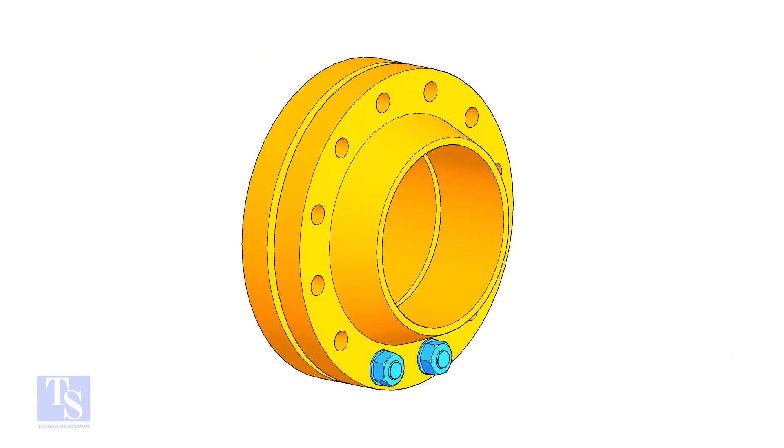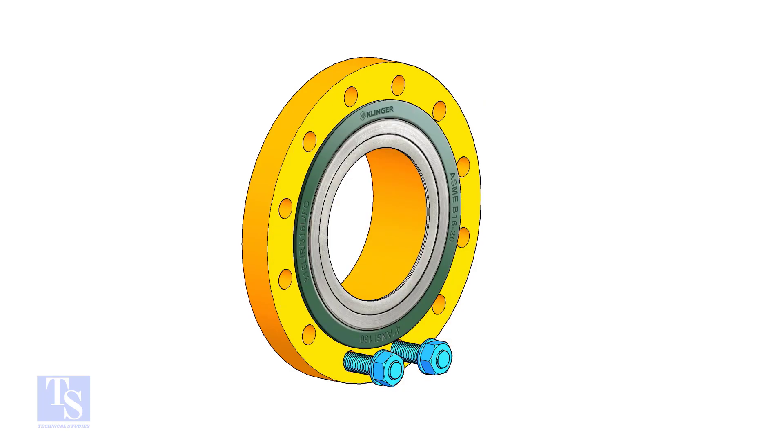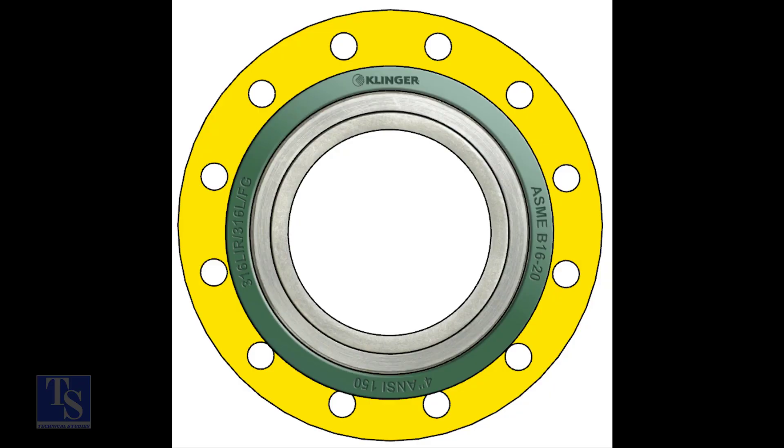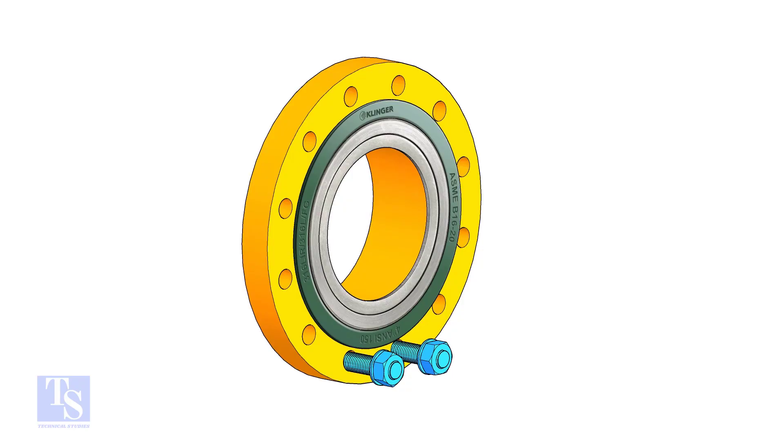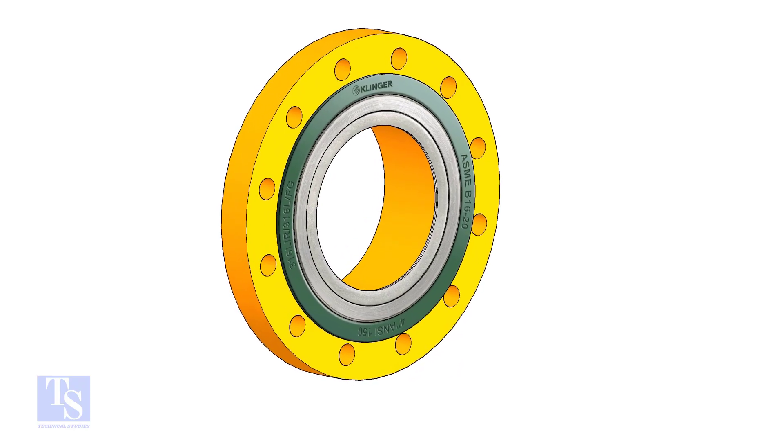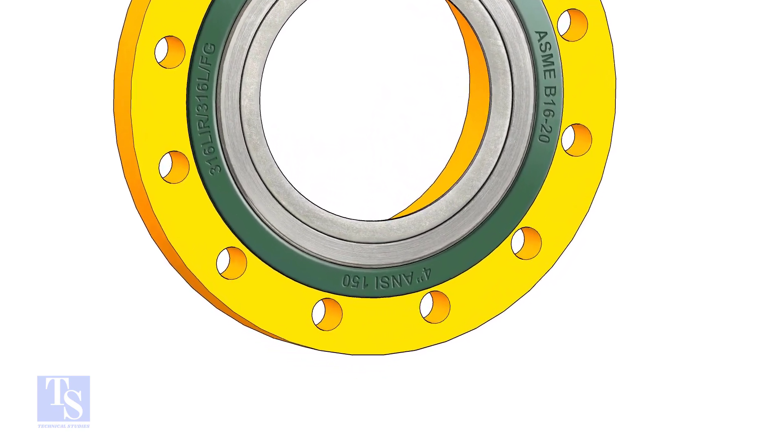Put two bolts in the adjacent bottom side holes. Put the gasket between the flanges. Now, the gasket sits eccentrically between the flanges. We need the gasket to sit exactly in the center of the flanges.